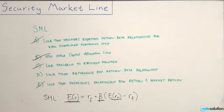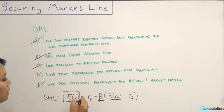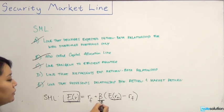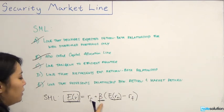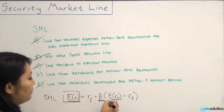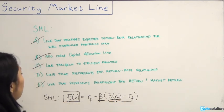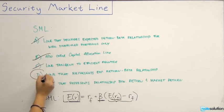Finally, we're left with D, which seems to be our only option. Answer D is the line that represents the expected return beta relationship. We have the expected return, and beta is a very important part of the security market line equation because beta defines the expected return based on the market risk premium. So D is our correct answer — the security market line is the line that represents the expected return versus beta relationship.